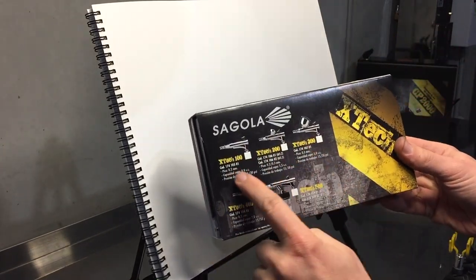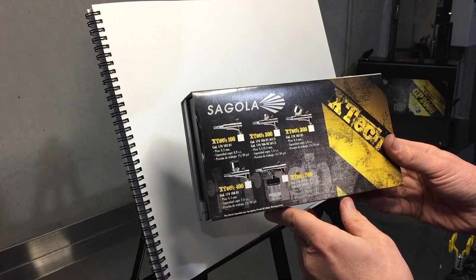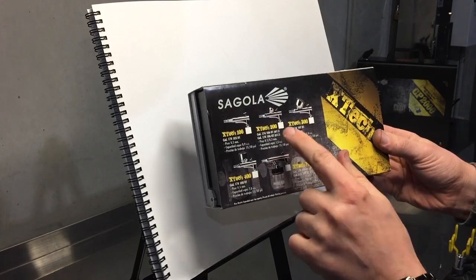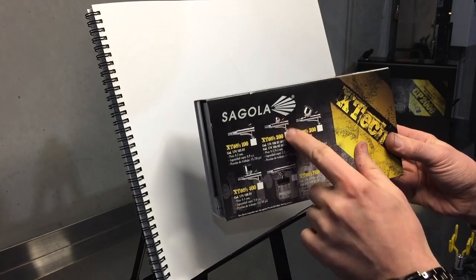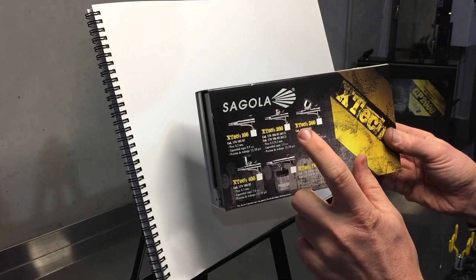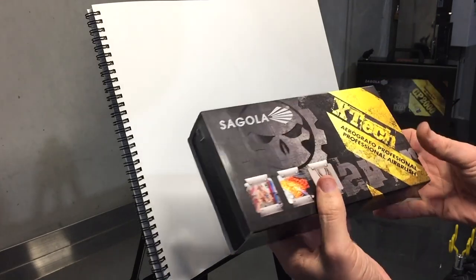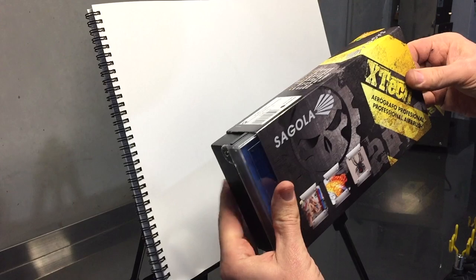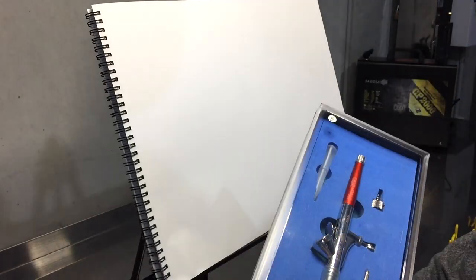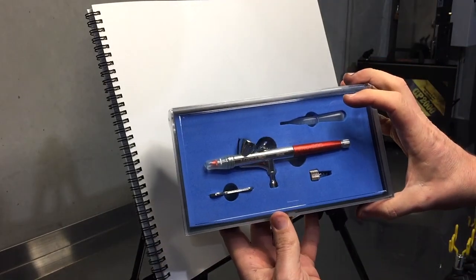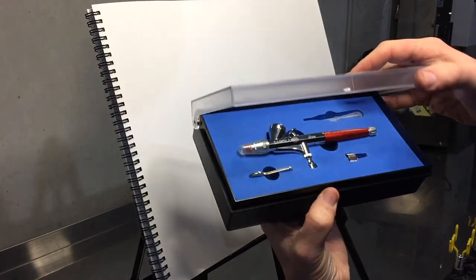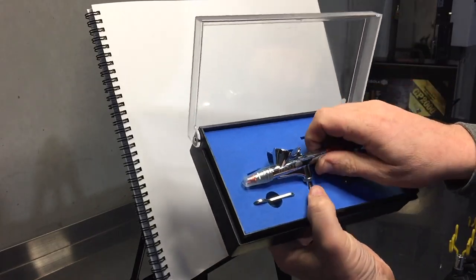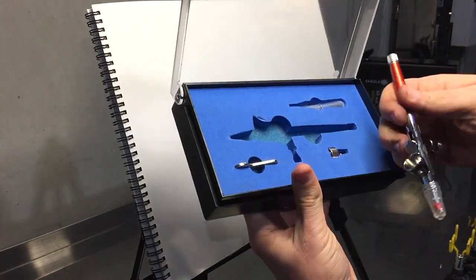On the back of the sleeve we've got all the other models listed. This particular brush is the X-Tech 200. It's got the smaller cup on the top and I'm testing the 0.2 mil needle. Let's go ahead and take it out of the package.